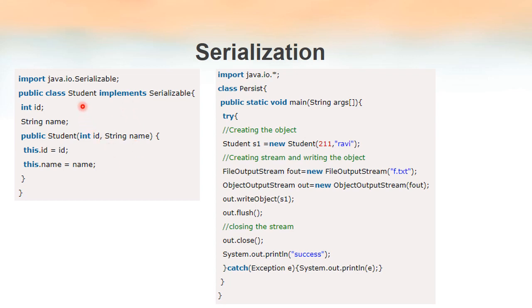Now we are going to create an object of this class and see how we can convert it into a stream. We are writing another class named Persist. Inside that we have a main method and we have opened a try-catch block. Here we are creating an object s1 of class Student, calling the constructor with two parameters: 211 will be copied to id and 'Revy' will be copied to name. Now remember when we call the method WriteObject there are parameters we have to give, one of which is the output stream.